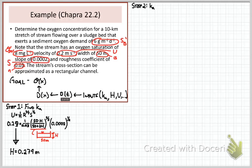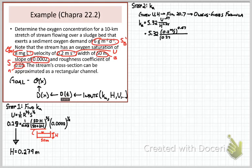For our next step we'll actually calculate Ka. Given the geometry of the stream we can go to figure 20.7 and using that chart find that we should be using the Owens Gibbs formulation. By plugging in the stream velocity in meters per second and the depth in meters, we calculate Ka of 19.1 per day.